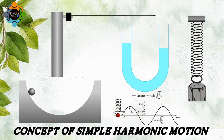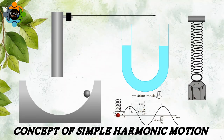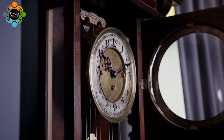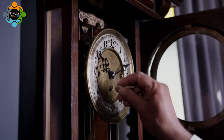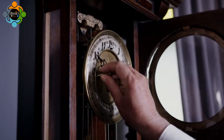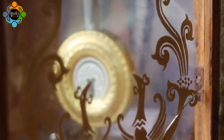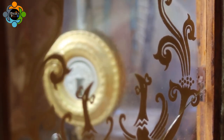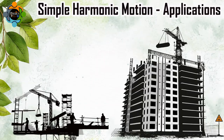As soon as the system returns to the equilibrium position, the force dissipates. This leads to the oscillation we see in various systems around us, such as waves, springs, and pendulums. A real-life example of simple harmonic motion is the movement of a grandfather clock — the weight of the clock causes the pendulum to swing back and forth at a constant frequency, maintaining balance in the system.